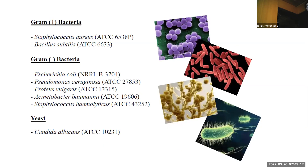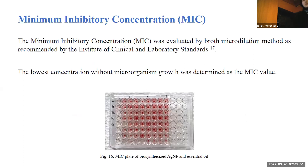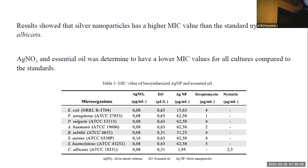In this study, gram-positive bacteria, gram-negative bacteria, and yeast cultures were used. The synthesized silver nanoparticles against Pseudomonas aeruginosa and Staphylococcus aureus obtained higher inhibition compared to standard penicillin. Silver nanoparticles showed lower inhibition than other samples against Escherichia coli. Minimum inhibitory concentration was evaluated by broth microdilution tests. Silver nanoparticles showed lower inhibition than the standard nystatin for Candida albicans.